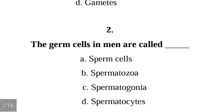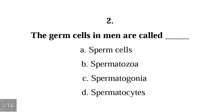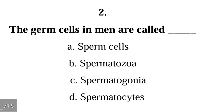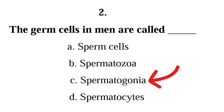Question 2: The germ cells in men are called — A. sperm cells, B. spermatozoa, C. spermatogonia, D. spermatocytes. The correct answer is C, spermatogonia. Spermatogonia are the germ cells found in men; the singular is spermatogonium.